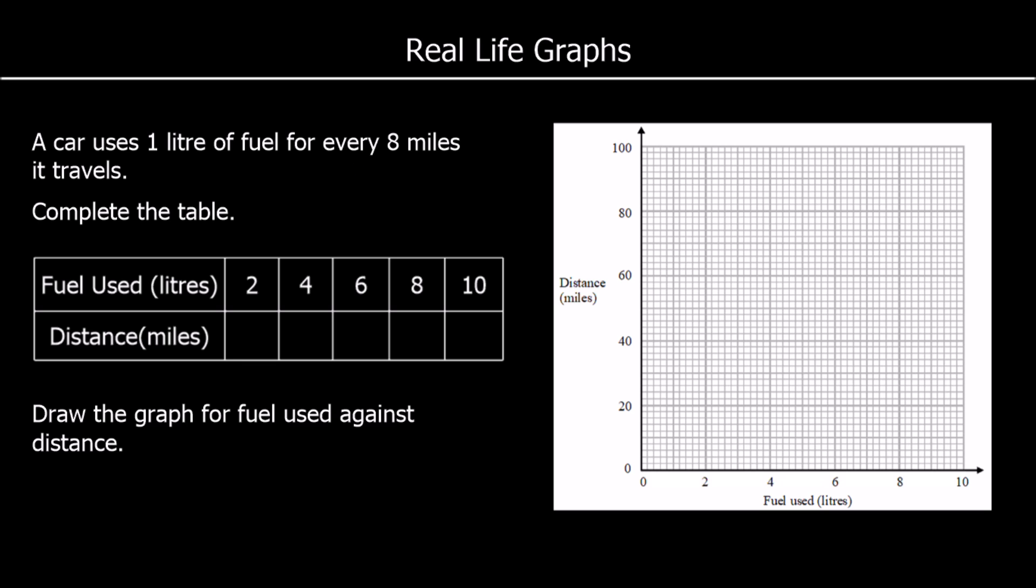A car uses 1 litre of fuel for every 8 miles it travels. Complete the table. So 1 litre of fuel for every 8 miles. To find the distance a car can travel, we're going to take the amount of fuel used and multiply by 8. So for every litre, it's 8 miles.